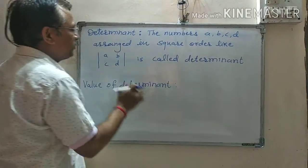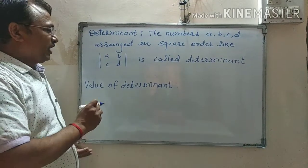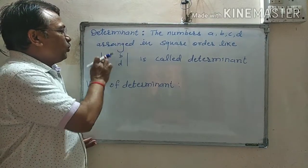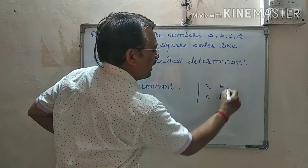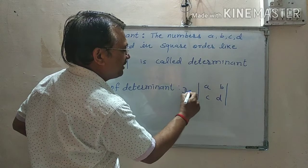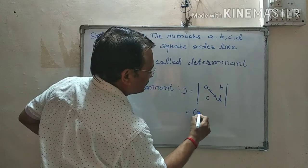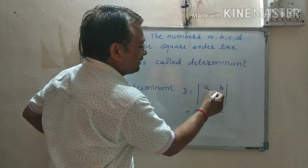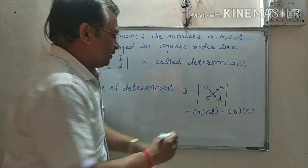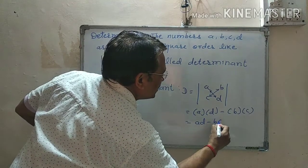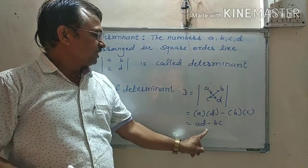This arrangement of four numbers is called determinant. The value of determinant - suppose A, B, C, D has a determinant, the value of D is equal to A into D minus B into C. That is AD minus BC. This is called the value of the determinant.